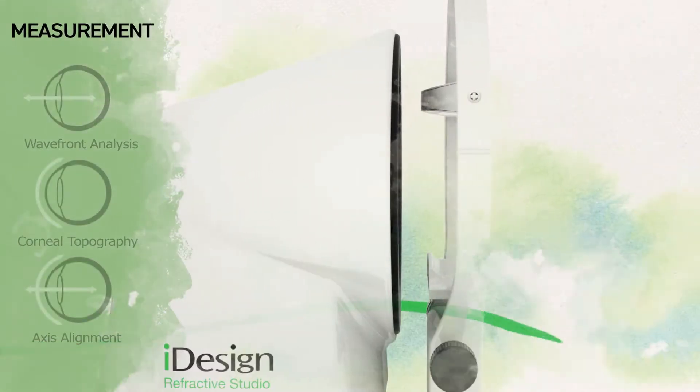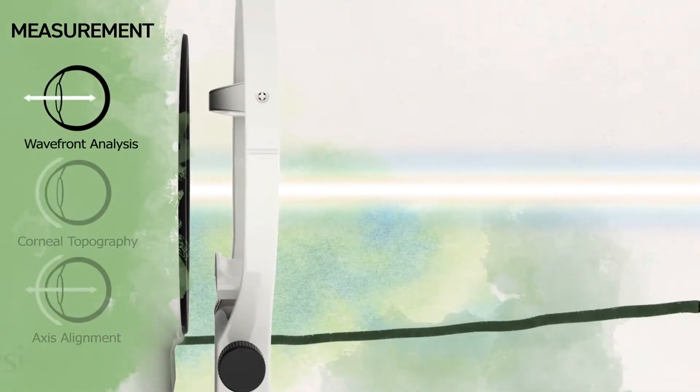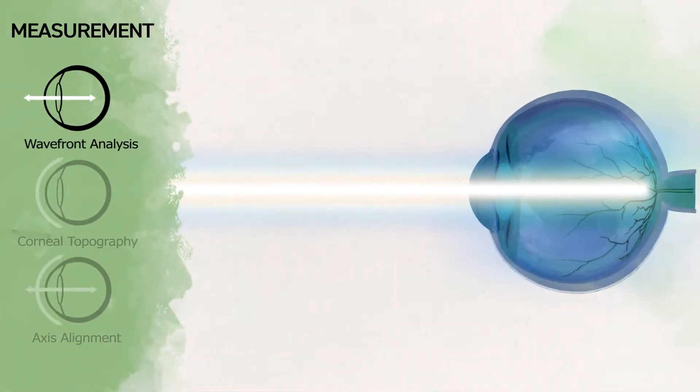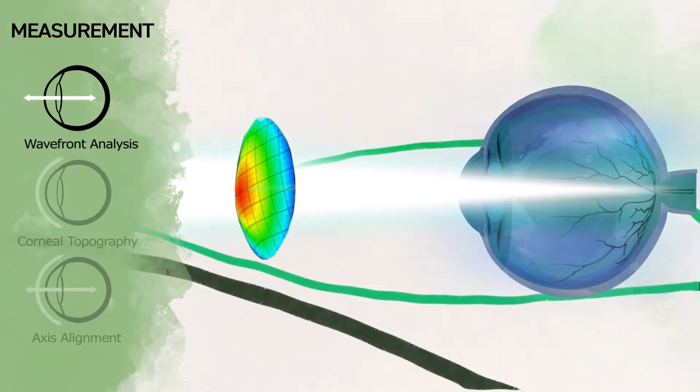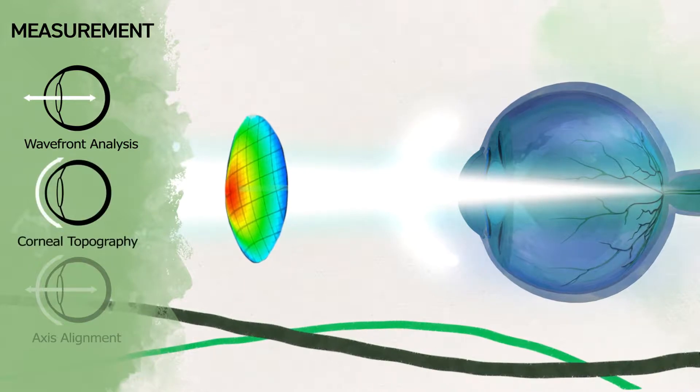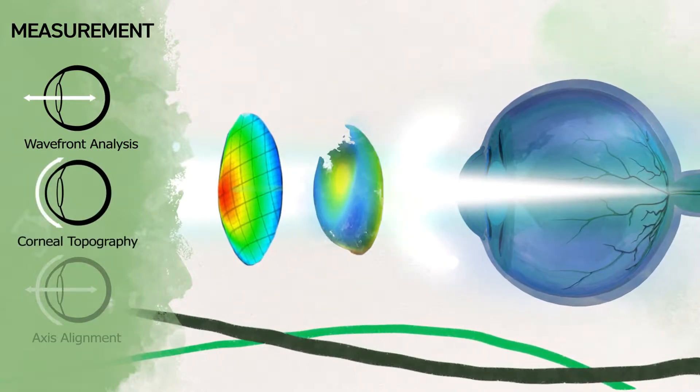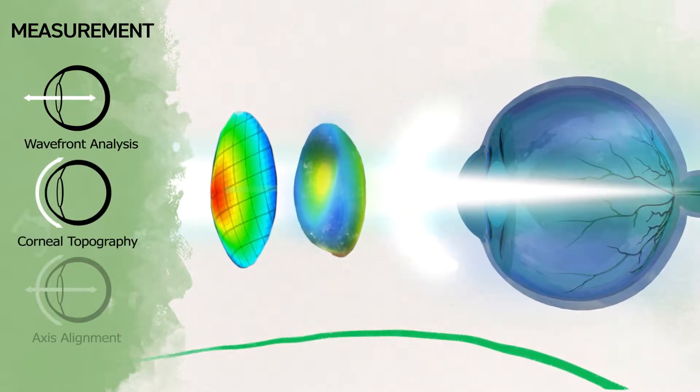To do this, the system projects a single spot of light onto the retina, capturing and analyzing the reflected light using over 1200 sensors across the pupil, while simultaneously analyzing the corneal surface using a highly advanced full gradient corneal topographer.